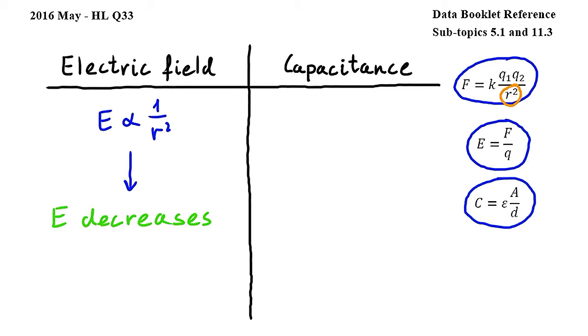From this equation we can clearly see that capacitance is inversely proportional to the distance between the plates. This means that as distance between the plates increases, capacitance decreases.